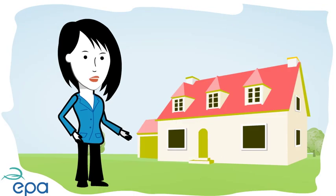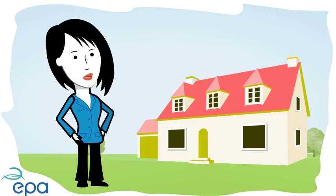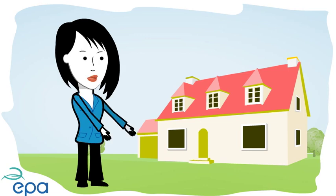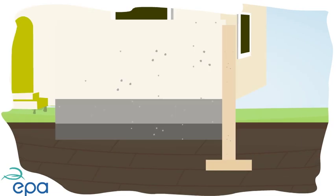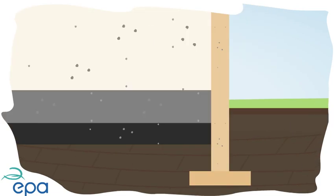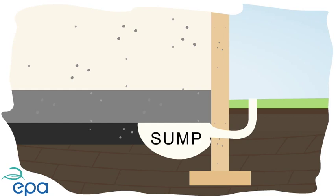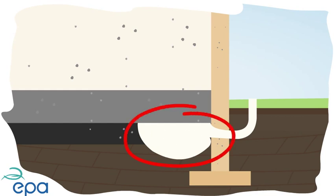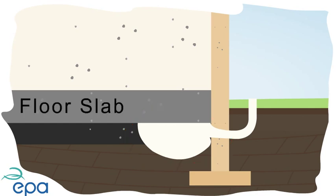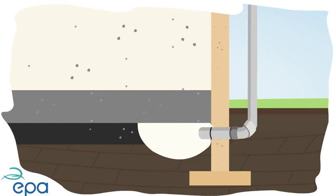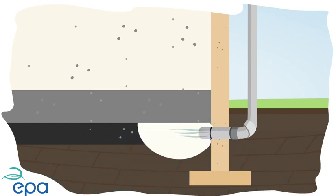The most effective and most commonly used way of reducing the flow of radon into your home is by installing an active radon sump. A radon sump is a cavity about the size of a bucket immediately under the floor slab that is linked by pipework to the outside. The radon-rich air coming from the ground is drawn out from under the floor slab by a small electric fan in the pipeline.